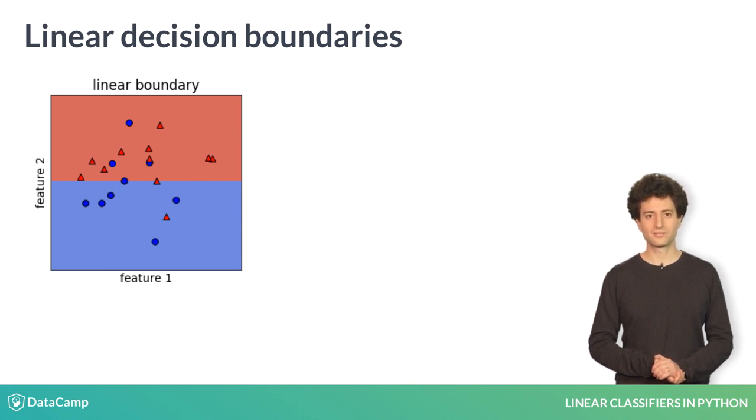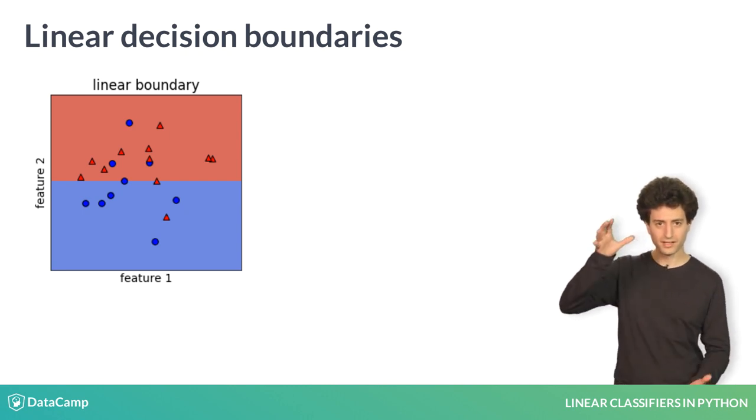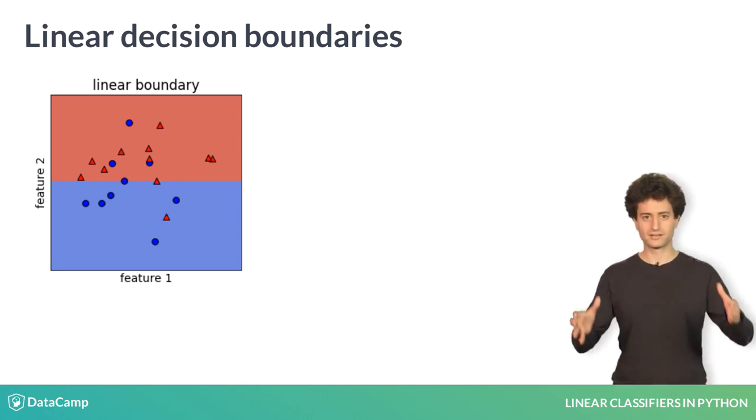This decision boundary is considered linear because it looks like a line. The line doesn't have to be horizontal — it could be in any orientation.